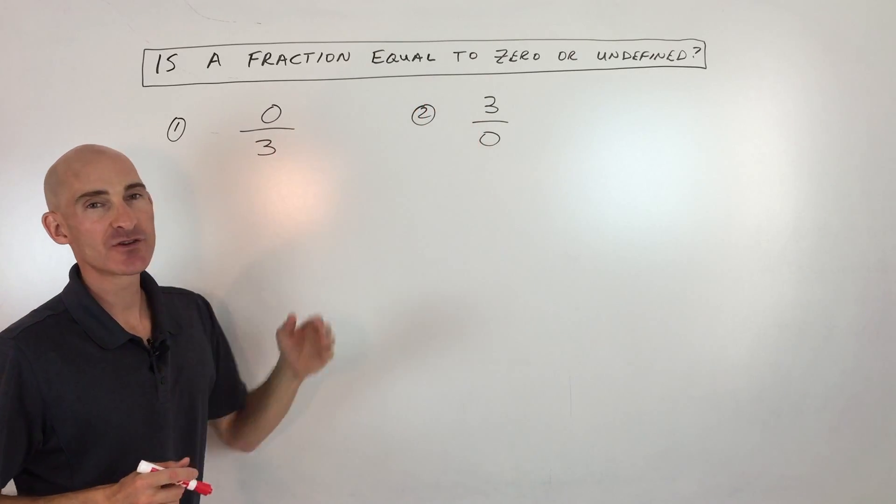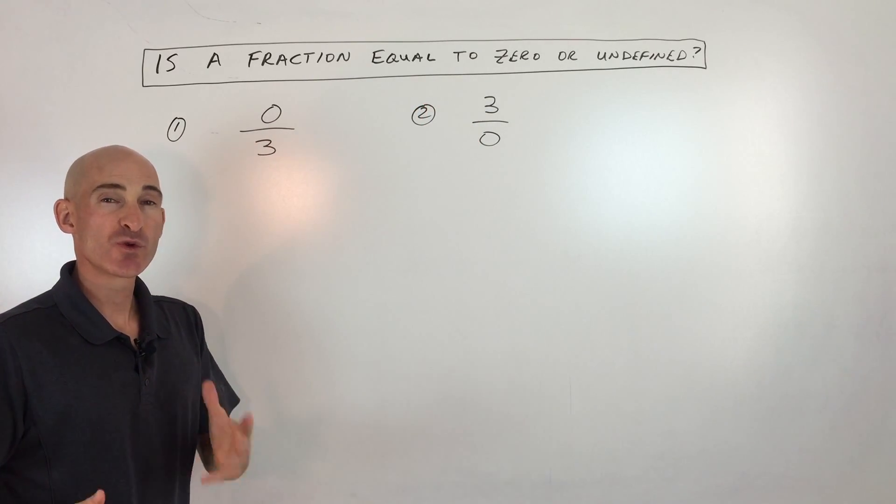Zero divided by three. Here I have three divided by zero. Which one of these is equal to zero and which of them is undefined?